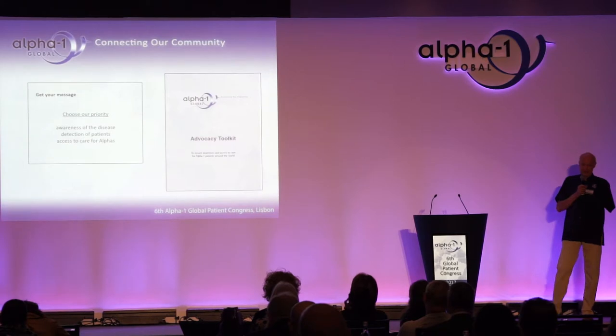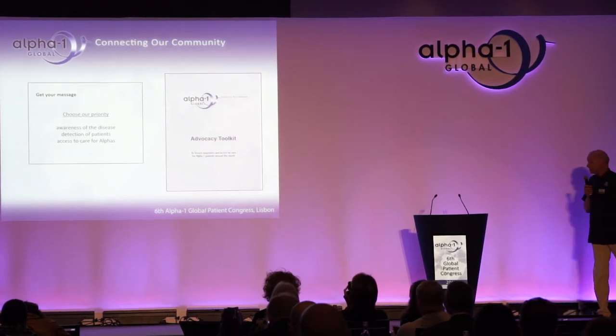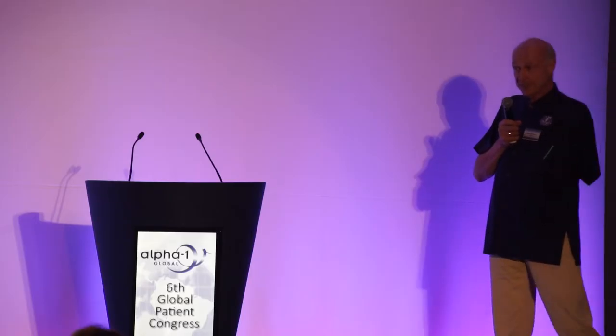As Karen explained about the advocacy toolkit, it's very important to focus on the most important message—whether it's awareness, detection of patients, or access to care for Alpha-1s. But as a young patient association, you cannot do everything. There is a lot of work to do, and the advocacy toolkit can help. We give some training and education.